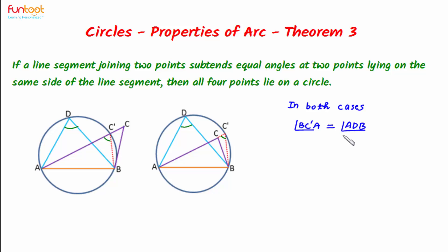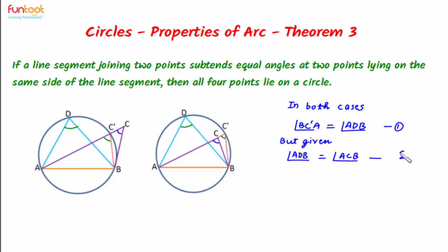So these angles are equal in both cases. But it is given in this theorem that angles ADB and ACB are equal. So here also, angles ADB and ACB will be equal. From the first result, angle BC dash A is equal to angle ADB, and from the second, angle ADB is equal to angle ACB. So from both, this implies that angle BC dash A is equal to angle ACB.